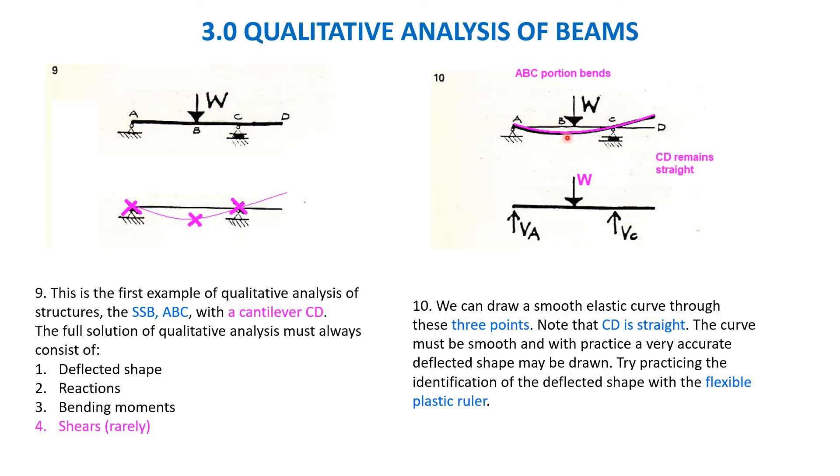Try practicing the identification of the deflected shape with a flexible plastic ruler. Take one flexible plastic ruler, support here, support here, and apply the load. You can see how it deflects. Some portion deflects straight like this. There is no bending here because it's not bending. If you have some load here then only it bends. Otherwise it's a roller that maintains the slope.